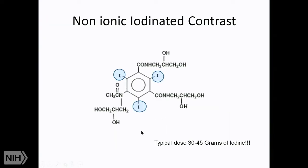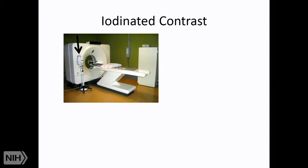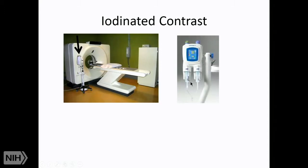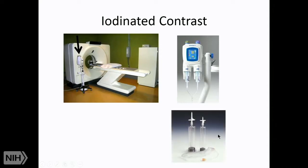It's a large dose of iodine — somewhere between 30 and 45 grams for a typical CT. In patients with normal renal function the vast majority is excreted, but this amount of iodine can interfere with sensitive thyroid function tests. To administer the iodinated contrast, we use an intravenous pump next to the scanner with two channels — one for contrast and one for a saline flush.